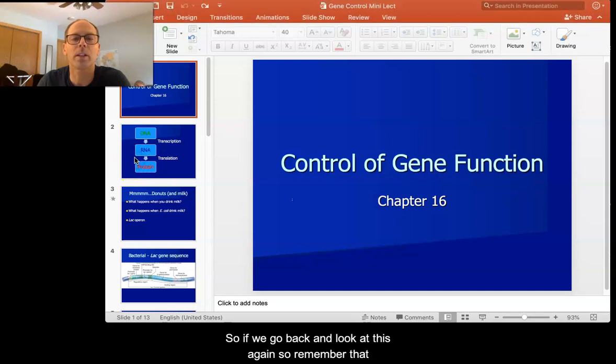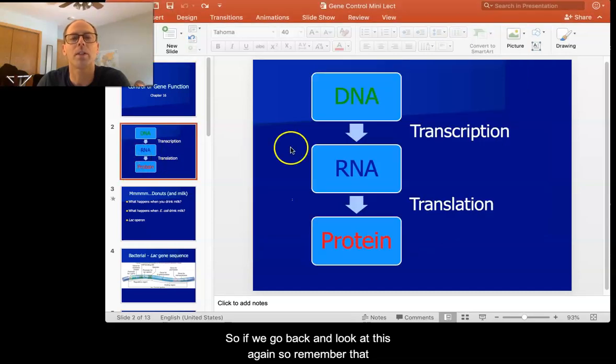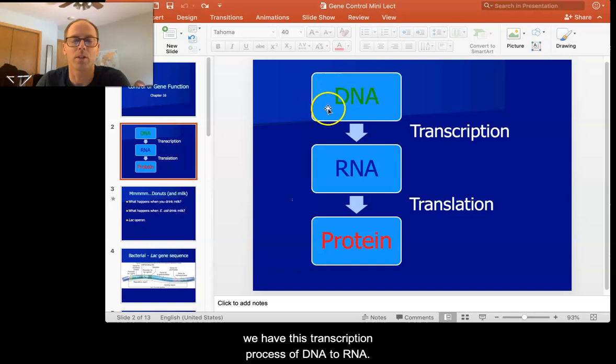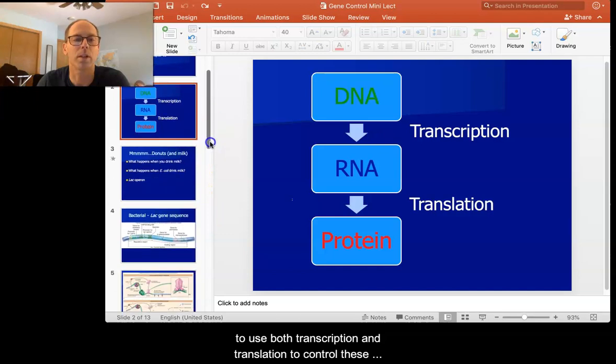So if we go back and look at this again, remember that we have this transcription process of DNA to RNA, translation of RNA to protein, and eukaryotic cells are going to use both transcription and translation to control these processes.